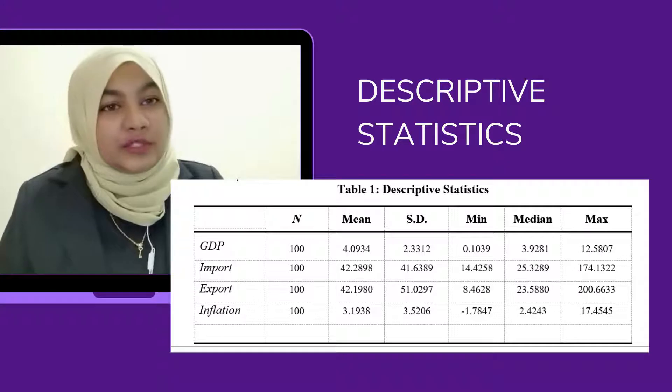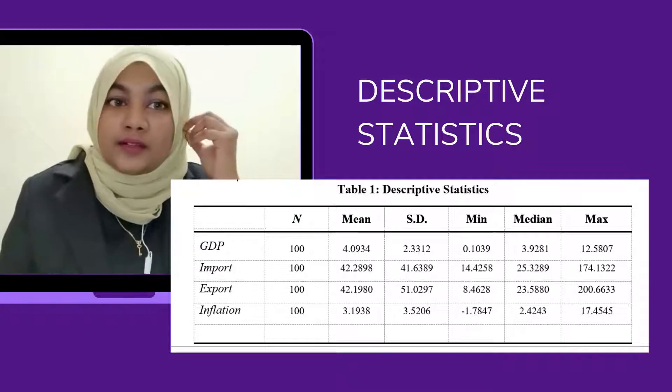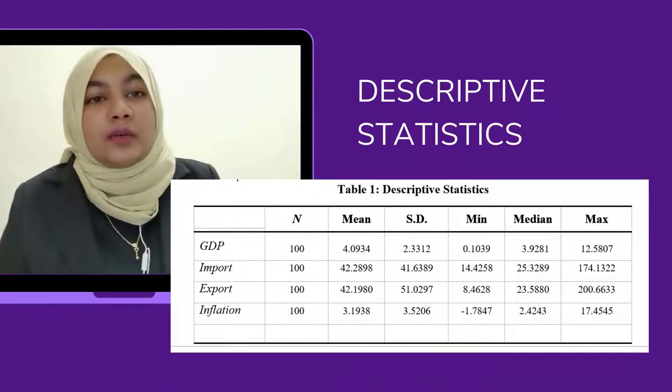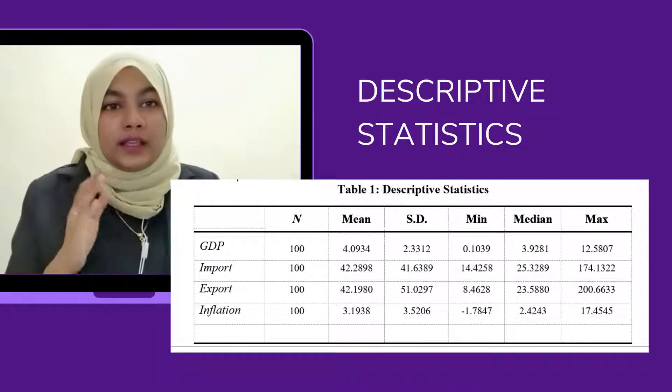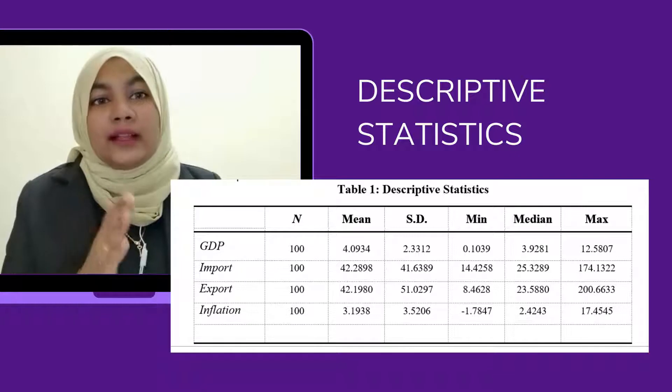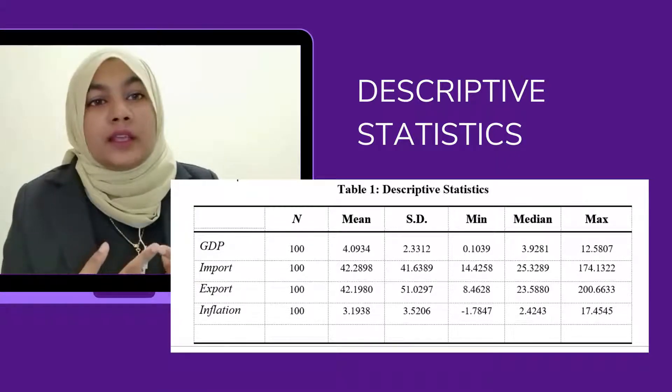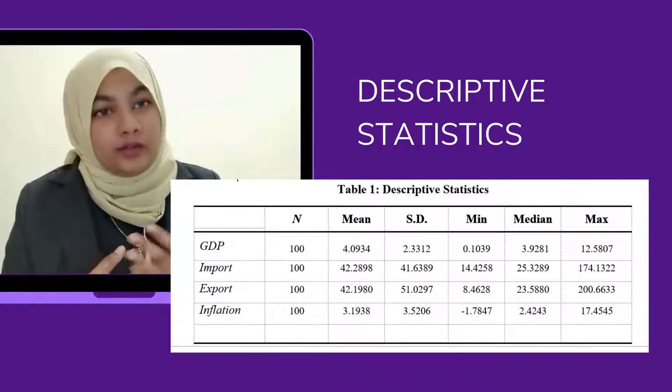We now come to the main results using Stata 12. For descriptive statistics, we take 10 samples from each country for a cumulative total of 100 samples of GDP, inflation, export, and import.